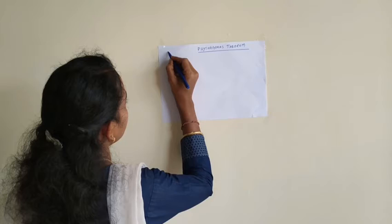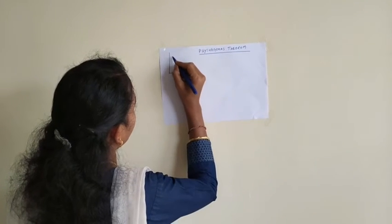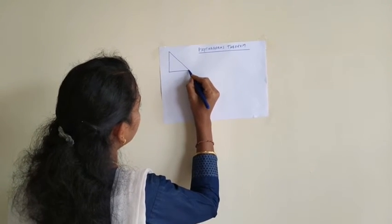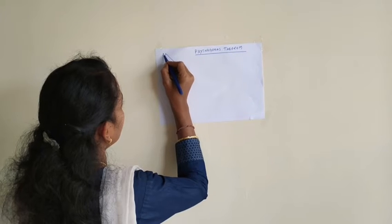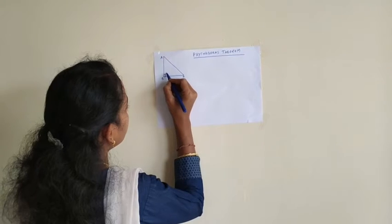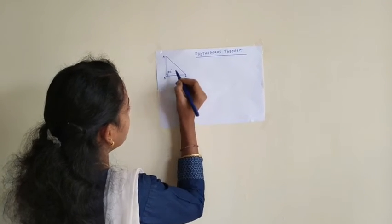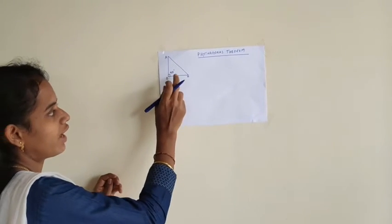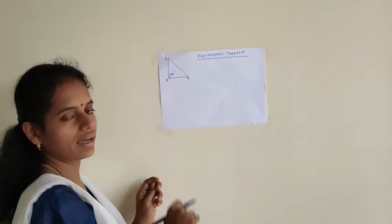We will see first what is a right angle triangle. In any triangle, if any angle of a triangle is 90 degrees, then the triangle is meant to be a right angle triangle.